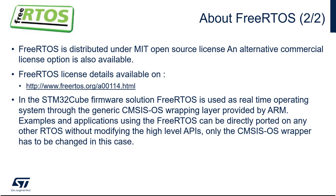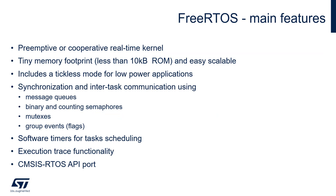The main features of FreeRTOS include a preemptive or cooperative real-time kernel — you can specify which option to use within the FreeRTOSConfig.h file. It has a tiny memory footprint of less than 10 kilobytes of flash memory and is easily scalable, allowing you to select only the components needed for your application.